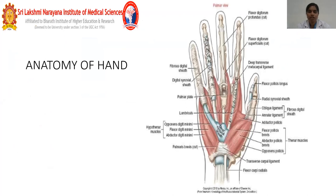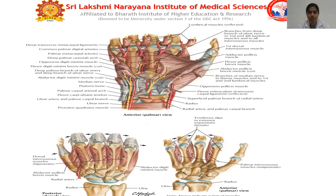Coming to the anatomy of the hand, it consists of the metacarpal bones along with the phalanges. There are intrinsic muscles of the hand and tendons of the forearm muscles which extend onto the palmar surface. The intrinsic muscles form the hypothenar eminence — opponens, flexor, and abductor digiti minimi — and the thenar muscles are flexor pollicis brevis, abductor pollicis brevis, and opponens pollicis. There are also lumbricals, dorsal interossei, palmar interossei, and adductor pollicis. The pictures show the dorsal interossei, which are bipennate, and the palmar interossei, which are unipennate.